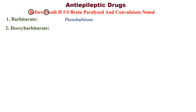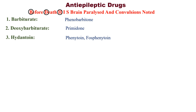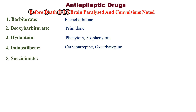'H' stands for hydantoin — example: phenytoin (note it ends in T-O-I-N). 'I' stands for iminostilbene — example: carbamazepine.